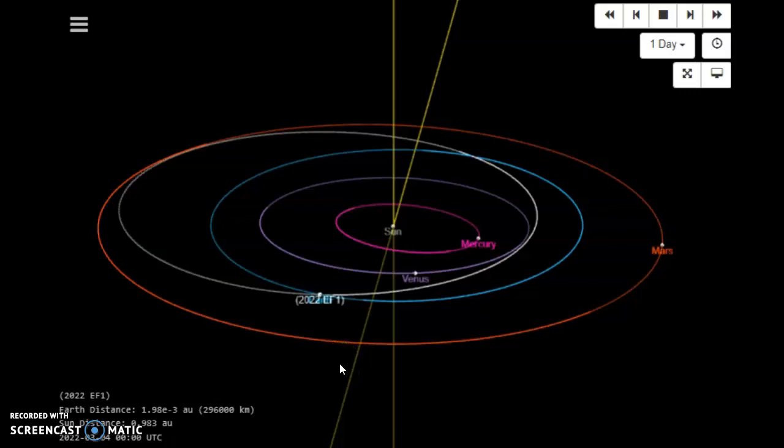It's supposed to fly between the Moon and Earth, they say 0.7 lunar distances. It's a very fast meteor traveling at 11.5 kilometers per second.